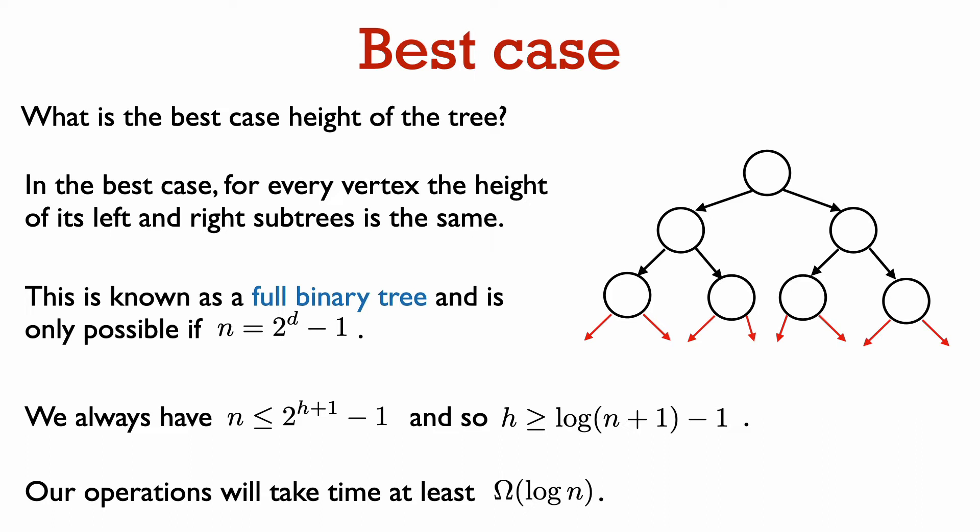Thus, a tree with n nodes will always have height at least a constant times log n, that is omega of log n.